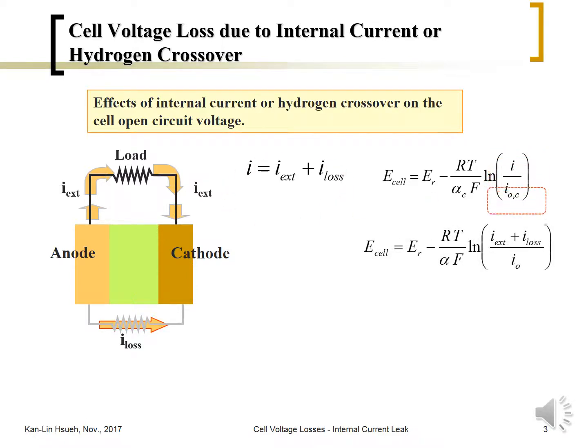The useful electricity is only the I_EXT, and the lost current we cannot enjoy at all because it's consumed inside the cell.